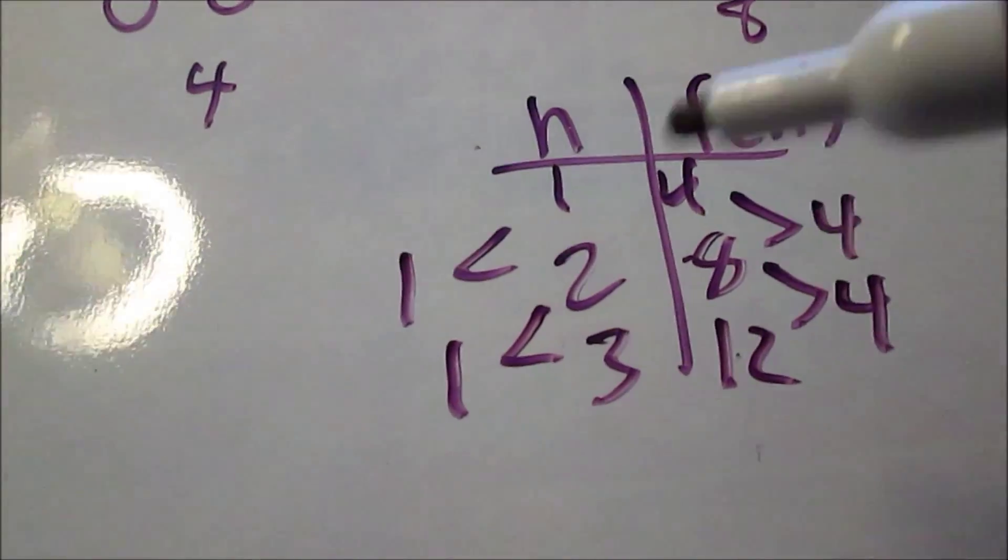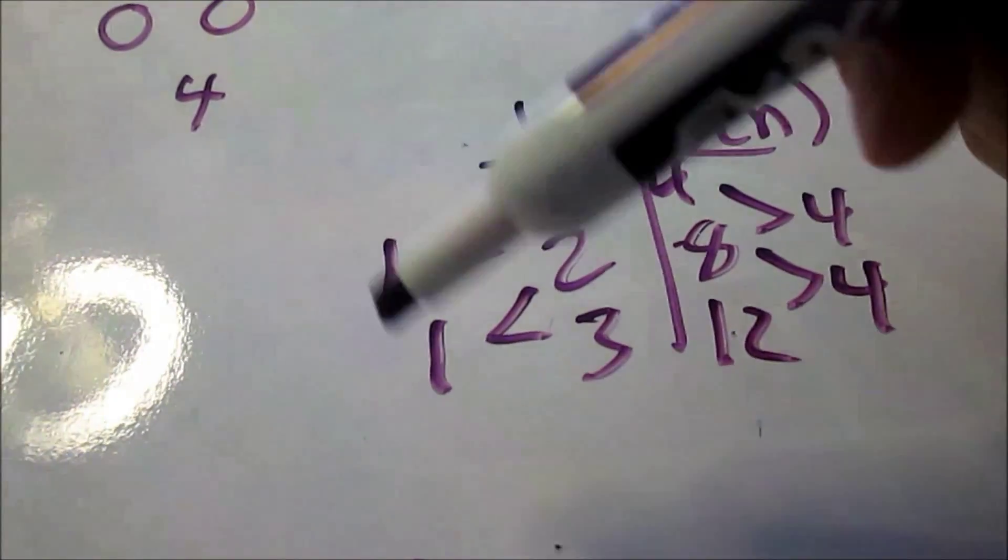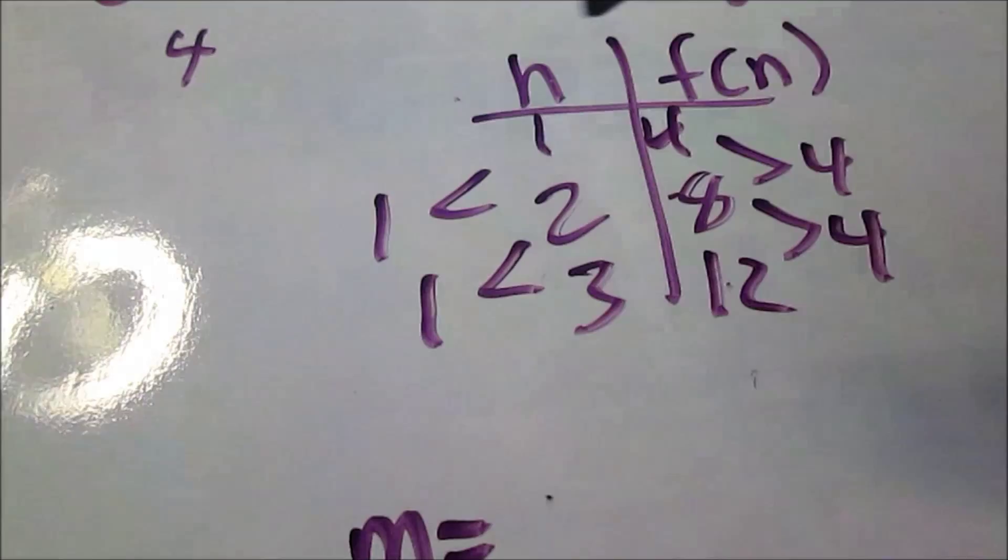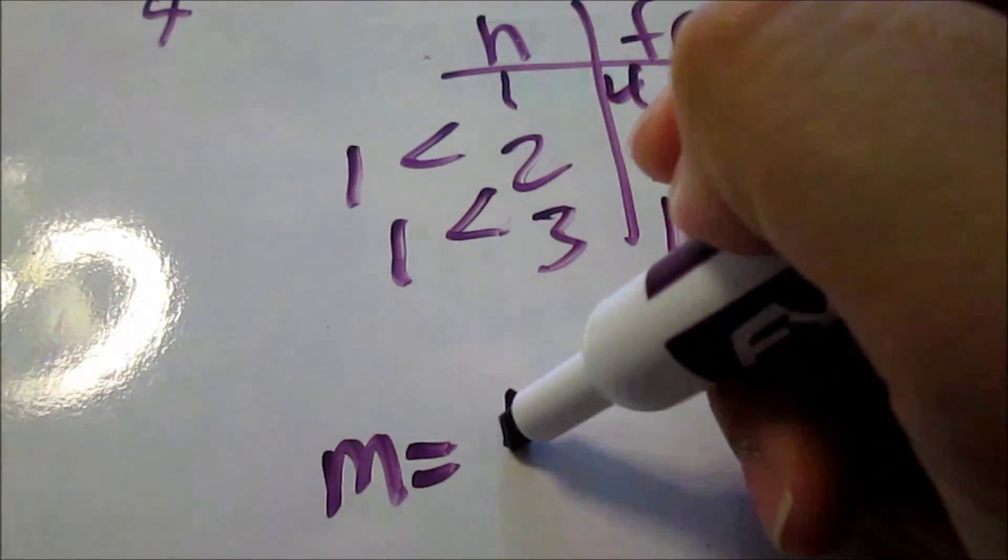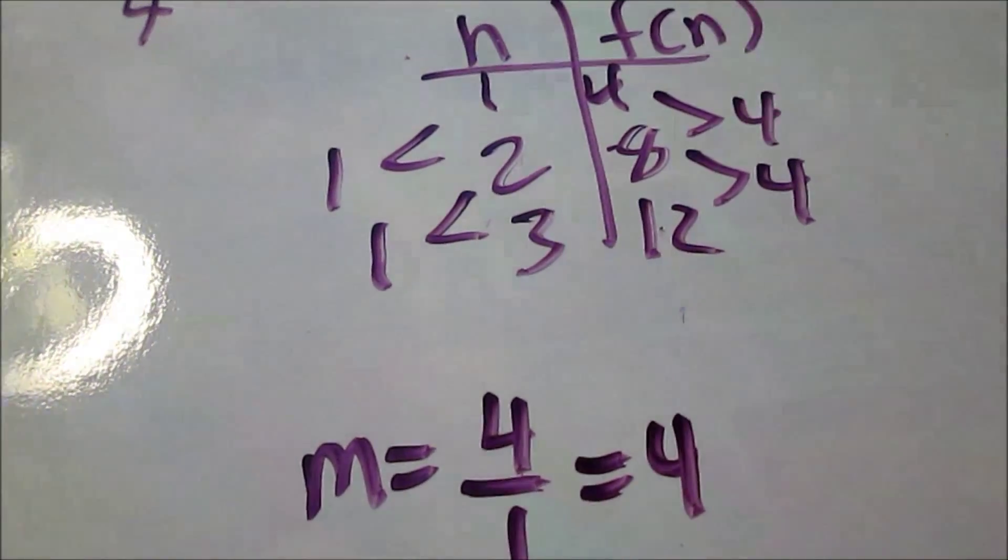And together, I create the slope, m. Slope just means rate of change. So how does it all change together? Four and one will be equal to, four over one will be equal to four. That's the rate of change, the slope.